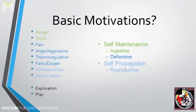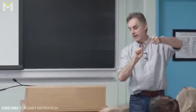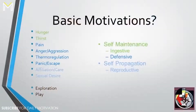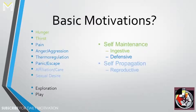Basic motivations: hunger, thirst, pain—though pain is not regulated by the hypothalamus, that's a different circuit—anger and aggression, thermal regulation, panic and escape, affiliation and care, sexual desire, exploration, and play. You can break those into classic Darwinian categories: self-maintenance motivations include ingestive ones like hunger and thirst, and defensive ones like pain, anger, thermal regulation, and panic. Reproductive motivations include affiliation, care, and sexual desire. Exploration serves both categories approximately equally.